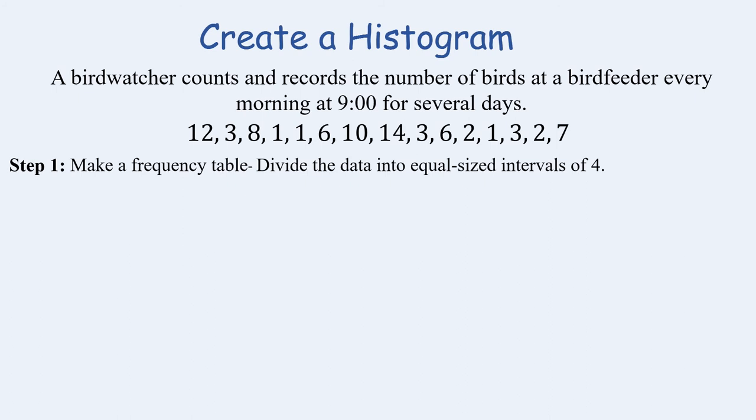First we're going to make a frequency table. So in this case I'm going to divide the data into equal size intervals of 4. The equal size intervals could change depending on your data. I'm going to use 4 for this problem. So you'll see that I started with 1 through 4, 5 through 8, 9 through 12, and 13 through 16 and then I recorded how many times a number showed up in that interval.